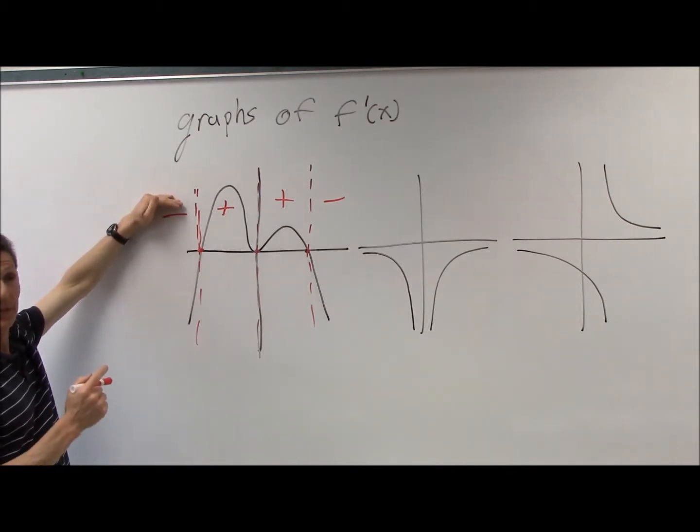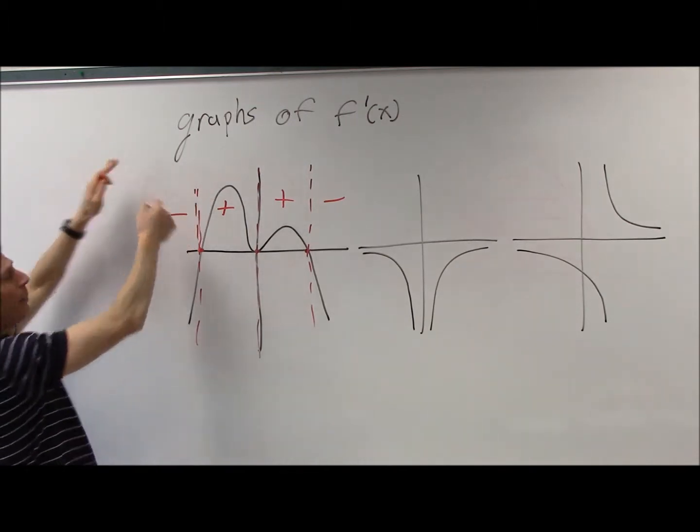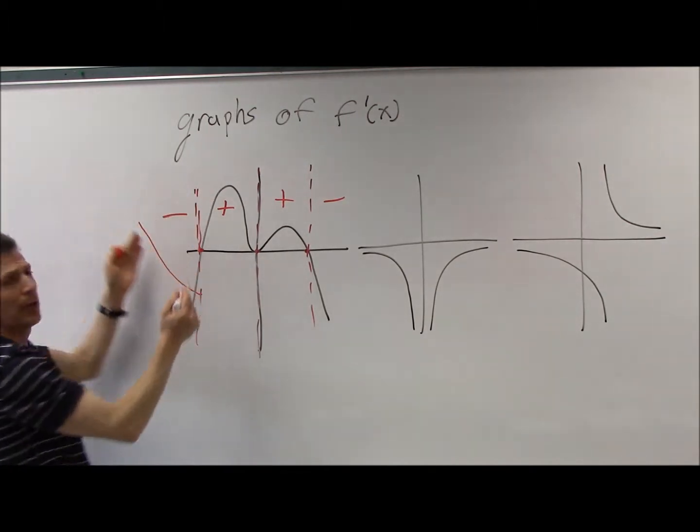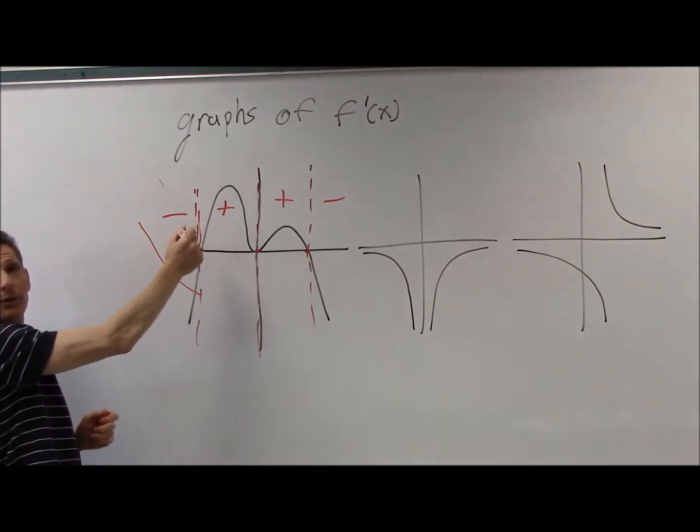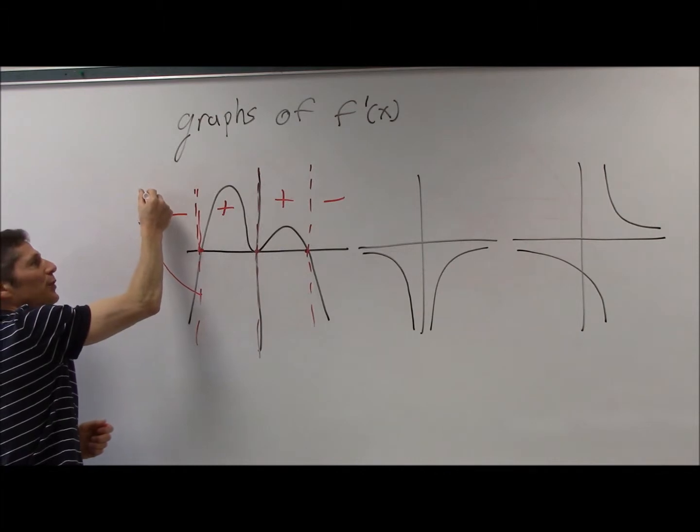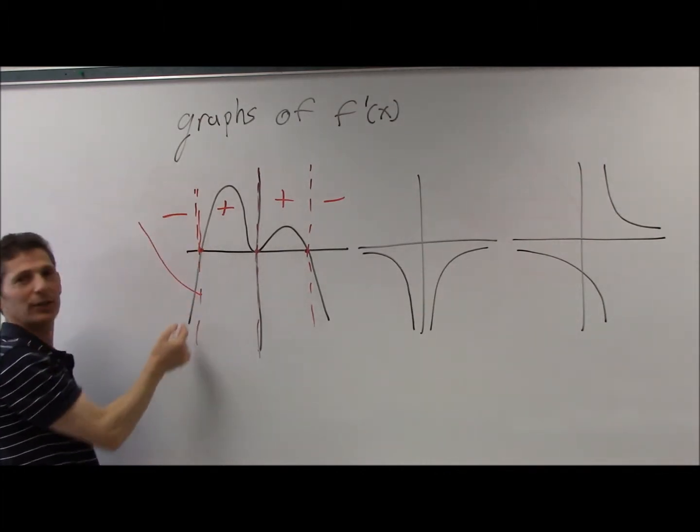This negative means the slope of the original guy is negative. So I have to go downhill. I don't know where I start. So you're going to sketch the original right now? Downhill. This is the original function. Could I have started here and gone downhill here? Sure. Sometimes students feel like they have to hit this point. You don't have to hit that point. Downhill to this line.